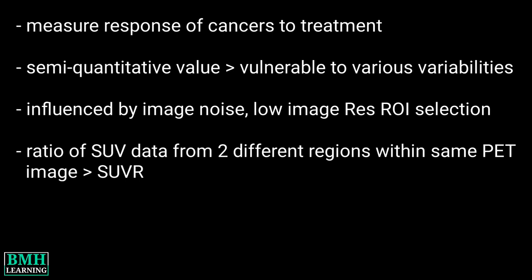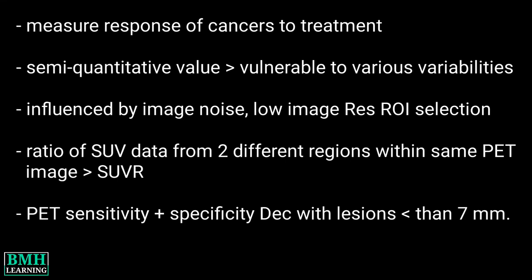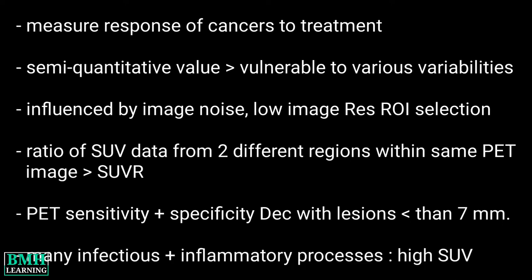The ratio of SUV data from two different regions within the same PET image — from a target and a reference region — is commonly abbreviated as SUVr. However, sensitivity and specificity decrease with lesions smaller than 7 mm, so continued follow-up is recommended. It is also important to note that many infectious and inflammatory processes will also have high SUV.